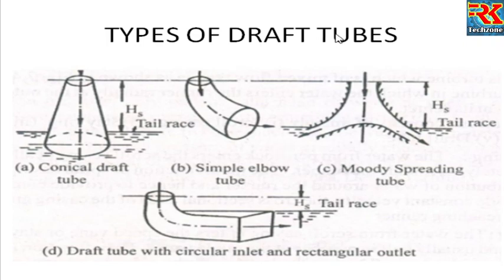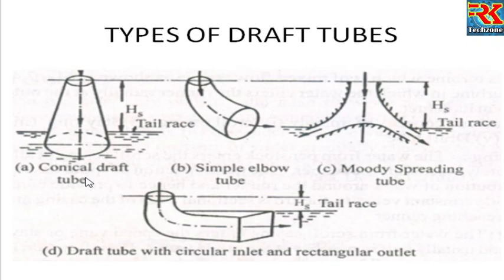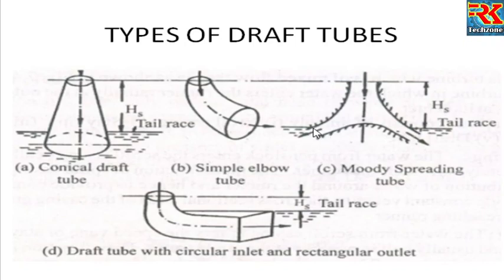Types of draft tubes is a very important topic. First is the Conical Draft Tube. Second is the Simple Elbow Type — the inlet and exit have equal diameter, shaped like an elbow. Third is the Moody Spreading Type, also written as A3V3 type. The area at the inlet is spread towards the exit.